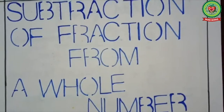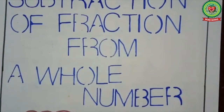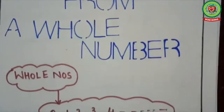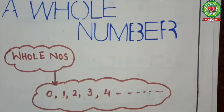Case 1 is: here we have to subtract a fraction from a whole number. Now, what do you mean by whole numbers? Whole numbers start from 0, 1, 2, 3, and so on. Now, if I want to express all the whole numbers as a fraction, how is it possible? If I write 1 in the denominator, the number will remain the same. Therefore, if I write 1 in the denominator, I can express a whole number as a fraction.